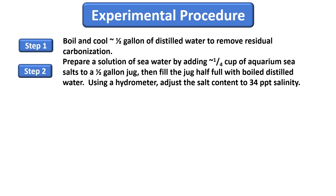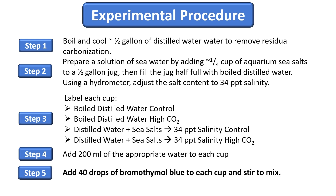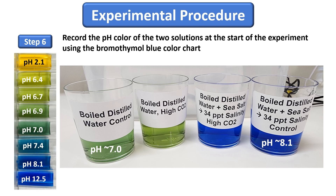The sea salt and hydrometer can be found online or at pet stores. Label four clear plastic or glass cups as shown, then add 200 milliliters of boiled distilled water or simulated seawater to each cup per its label. Add 40 drops of bromothymol blue to each cup and stir. Record the pH of the solutions in each cup using the bromothymol blue color chart as a guide. Degassed distilled water has a neutral pH of 7, and our simulated seawater has a pH of about 8.1, which is typical of the world's oceans.